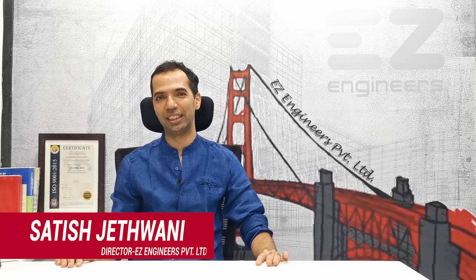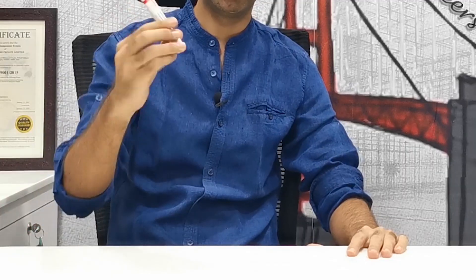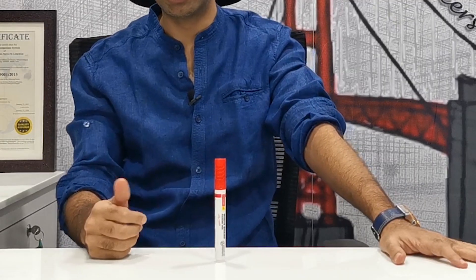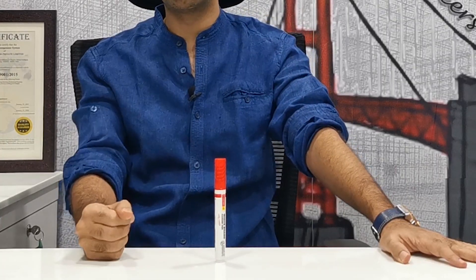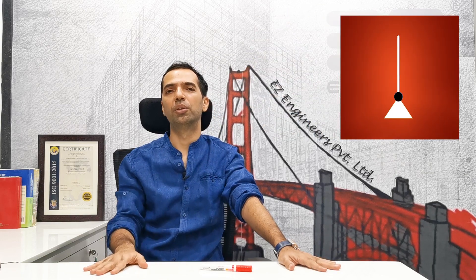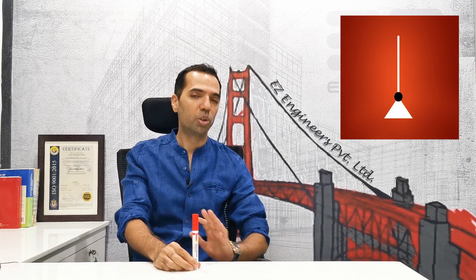Hello friends, welcome again to EZ Engineering Learnings. Today we will learn about stability. I'm giving you a simple example — this is a marker. What do you think, friends, whether this is stable? It is not moving, of course — there is no movement as of now. But if I touch it and give a slight horizontal load, this will fall down. So of course, this is not stable.